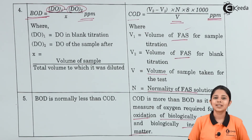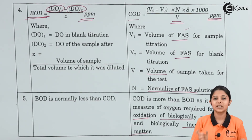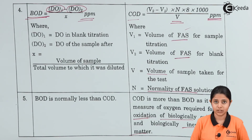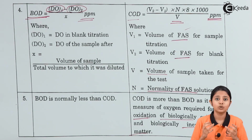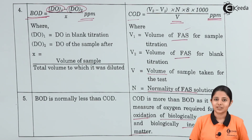So in this session, we studied the difference between BOD and COD. BOD is Biochemical Oxygen Demand, COD is Chemical Oxygen Demand. We studied what both of these are, what the units are, how to measure them, and how they are useful in determining what kind and amount of impurities are present in water. Thank you so much for watching this video. Stay tuned to Ikeda and subscribe to Ikeda.